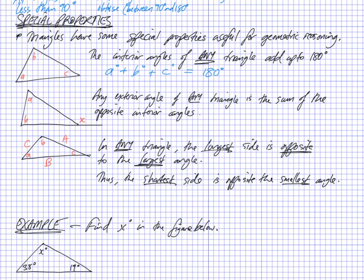The next thing we have is any exterior angle of any triangle is the sum of the opposite interior angles. So this triangle here has a straight line coming out of the other side. That is the exterior angle here.